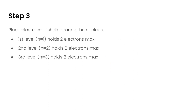In step three we need to start placing electrons in shells around the nucleus, and there are specific rules for where electrons go. In the first shell — also called the first level or n equals 1 — it holds only up to two electrons maximum.